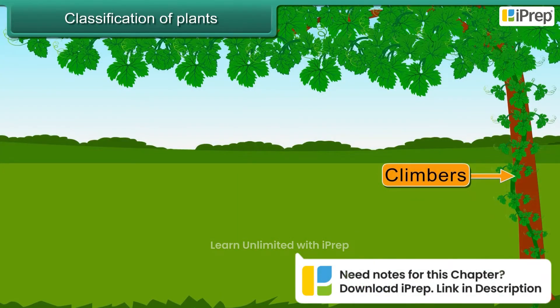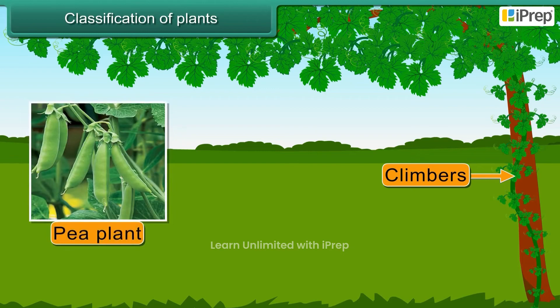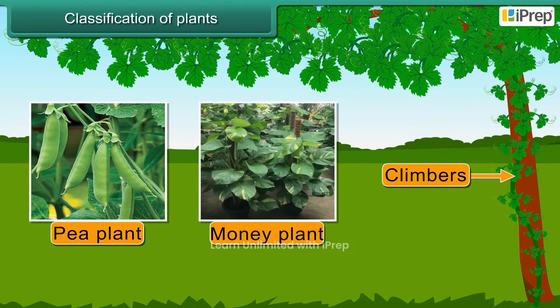Climbers have very weak stems but they need support to grow. Examples of climbers are the pea plant, money plant, etc.